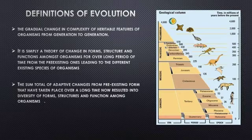The second definition is it is simply a theory of change in forms, structure and functions amongst organisms over a long period of time from the pre-existing ones leading to the different existing species of organisms. What this is saying is that evolution is not just a term, it's a theory, an observation. It's a theory that has been tested over time by different scientists and it's still talking about change in the complexity, in the structure of organisms that existed in ancient times till the present different diversity of organisms that we have now.